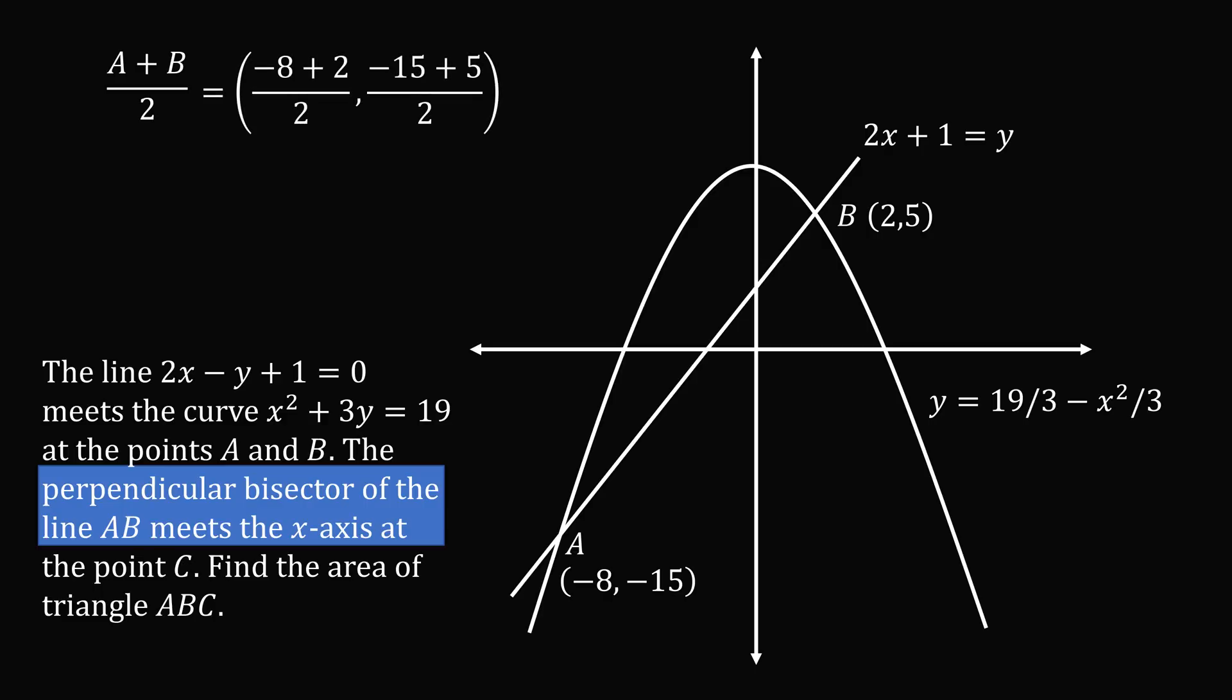We have negative 8 plus 2 all over 2 for the x coordinate, and negative 15 plus 5 all over 2 for the y coordinate. This works out to be negative 3 comma negative 5, and we will label this point as M for the midpoint.